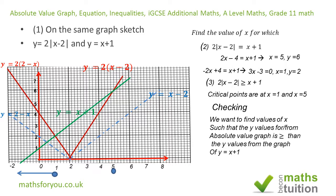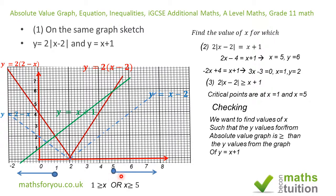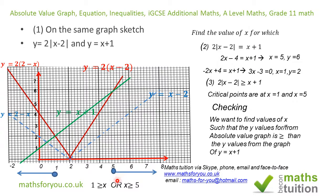So values greater than or equal to 5 satisfy this inequality, and values of X equal to 1 or less than 1 are also valid. Therefore either X is less than or equal to 1, or X is greater than or equal to 5. Instead of 'or' you can use the union sign — same thing. I hope that made sense. Please subscribe, thank you for watching, bye bye.